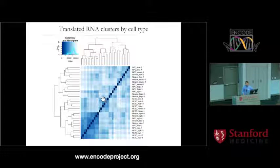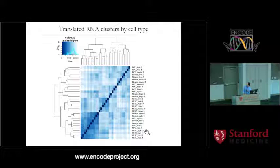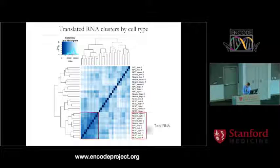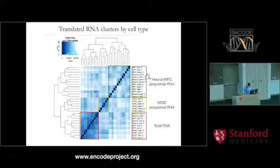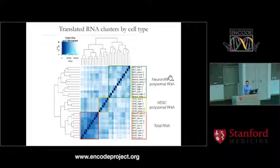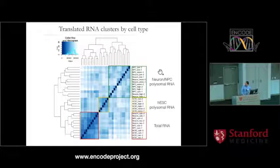Another interesting finding: if you cluster all of these samples — where on the y-axis you have 30 different samples from the cytoplasmic nucleus as well as the polysomal fractions — what jumps out is that total RNA from all ES cells, neuroprogenitor cells, and neurons all clusters together at the bottom. What separates at the top is translated RNA: the human ES cell polysomal RNA clusters apart from the neuron and neuroprogenitor cell polysomal RNA, suggesting that ribosome-associated RNA might actually be a better way to stratify cell types than looking at total RNA.